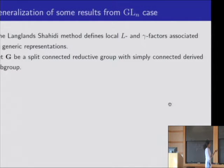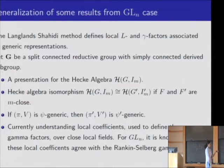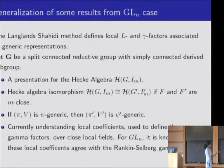Some parts of this problem are done. For G a split connected reductive group with simply connected derived subgroup — which includes both GSp_4 and GL_N — we can write down a presentation for the Hecke algebra H(G, I_M), generalizing Hov's work, with an explicit list of generators and relations. By inspection of those relations, if the fields F and F prime are M-close, then these two Hecke algebras are isomorphic. This transfers representations with non-zero I_M fixed vectors to representations with non-zero I_M prime fixed vectors, and Lemire's work goes through: if one representation is Z-generic, the other is Z prime-generic.